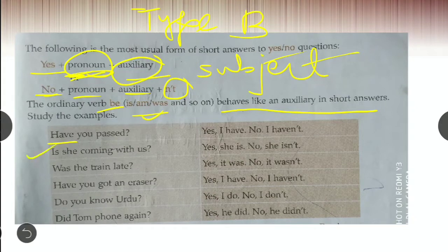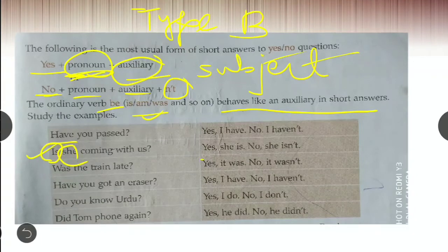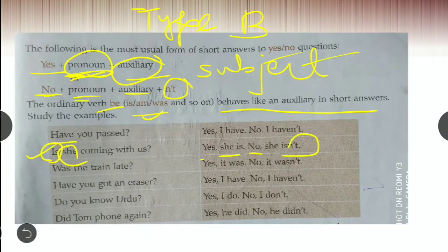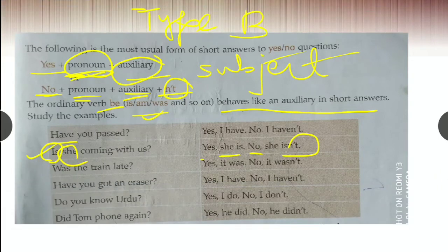See the next one. Is she coming with us? So is, be verb, she pronoun. So yes, comma, she is. No, comma, she isn't. Next. Was the train late? Yes. Train, which pronoun do we use for that subject? It. And was. No, it wasn't. After yes and no, you have to put a comma. This is how you are going to write the short answers.